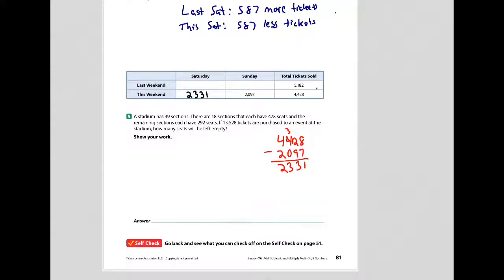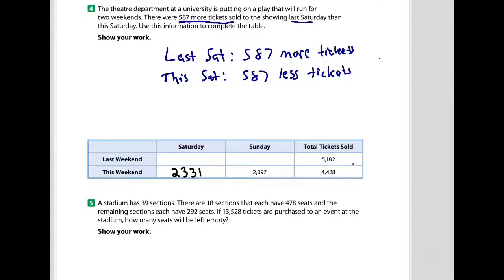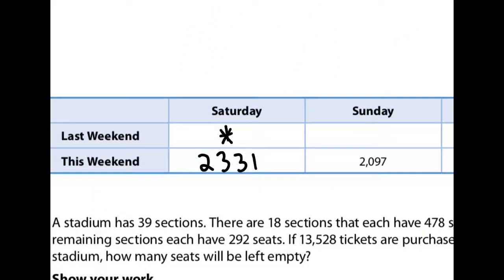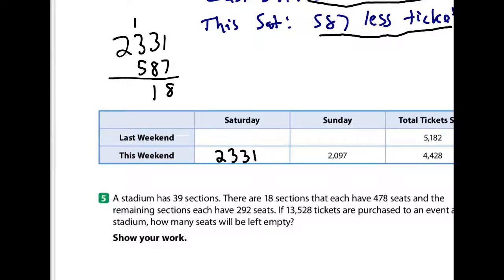Now I'll use the information I wrote down. This is this Saturday — this weekend. This Saturday had 587 fewer tickets than last Saturday, which means last Saturday had 587 more. So last Saturday's number has to be 587 more than 2,331. I take 2,331 and add 587 — that gives me 2,918.